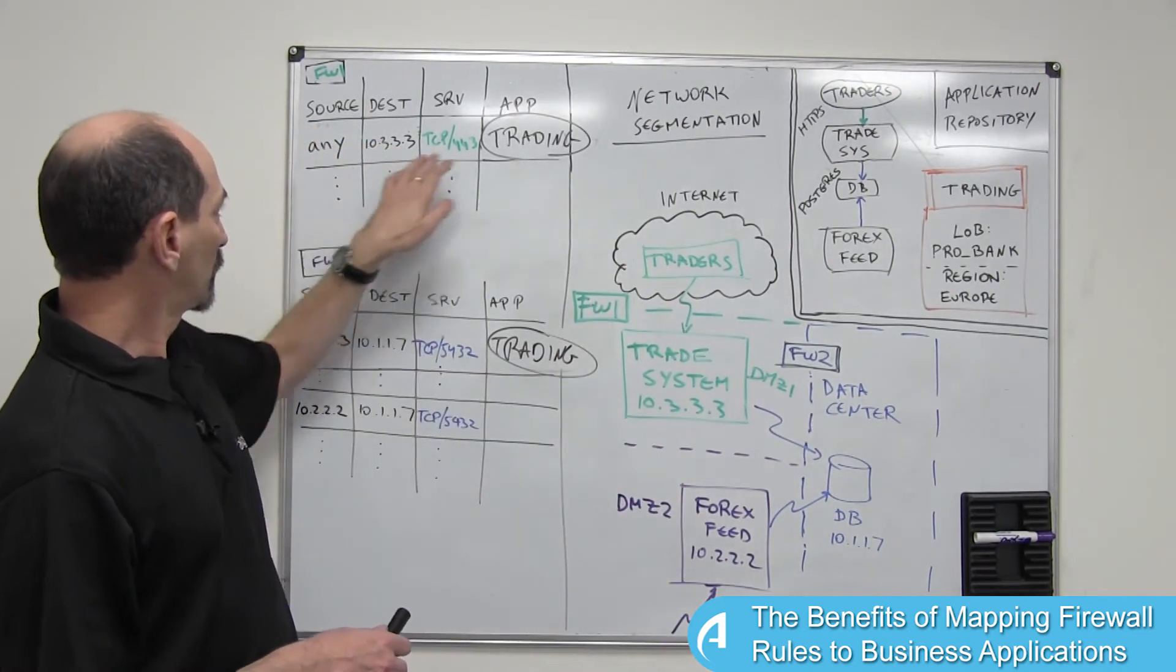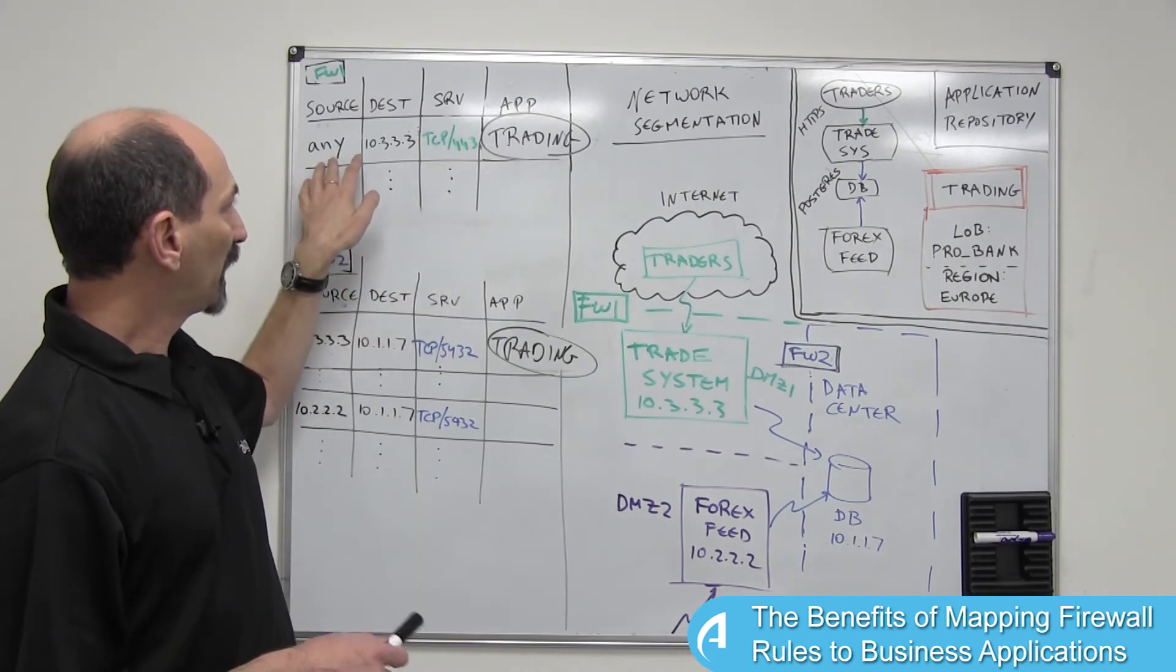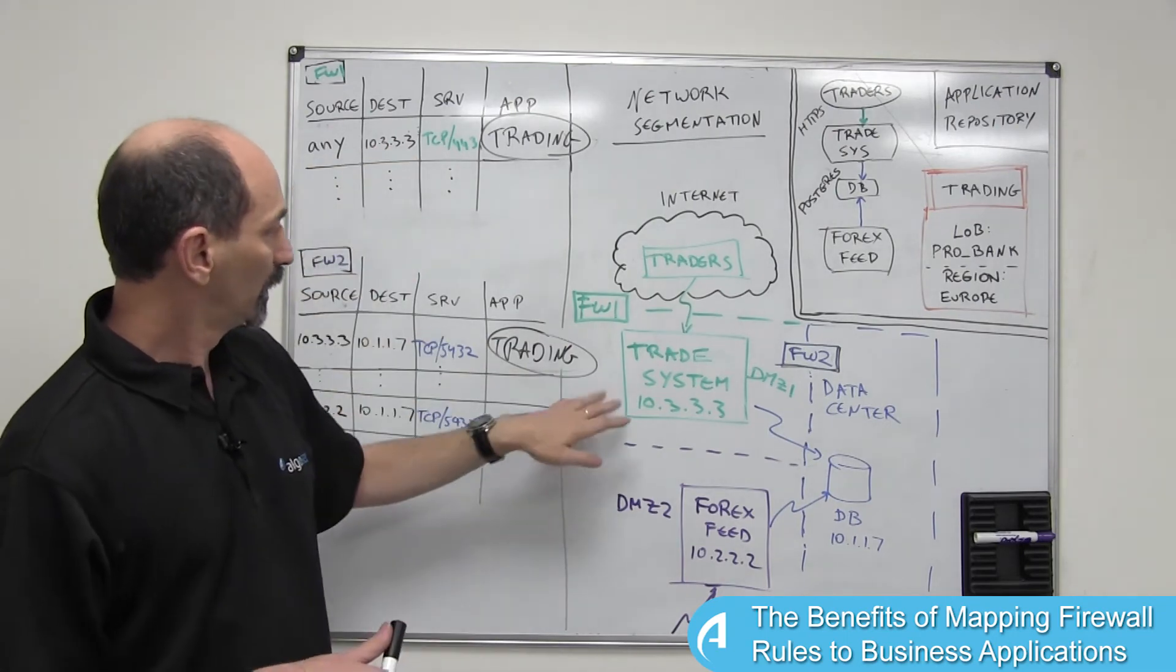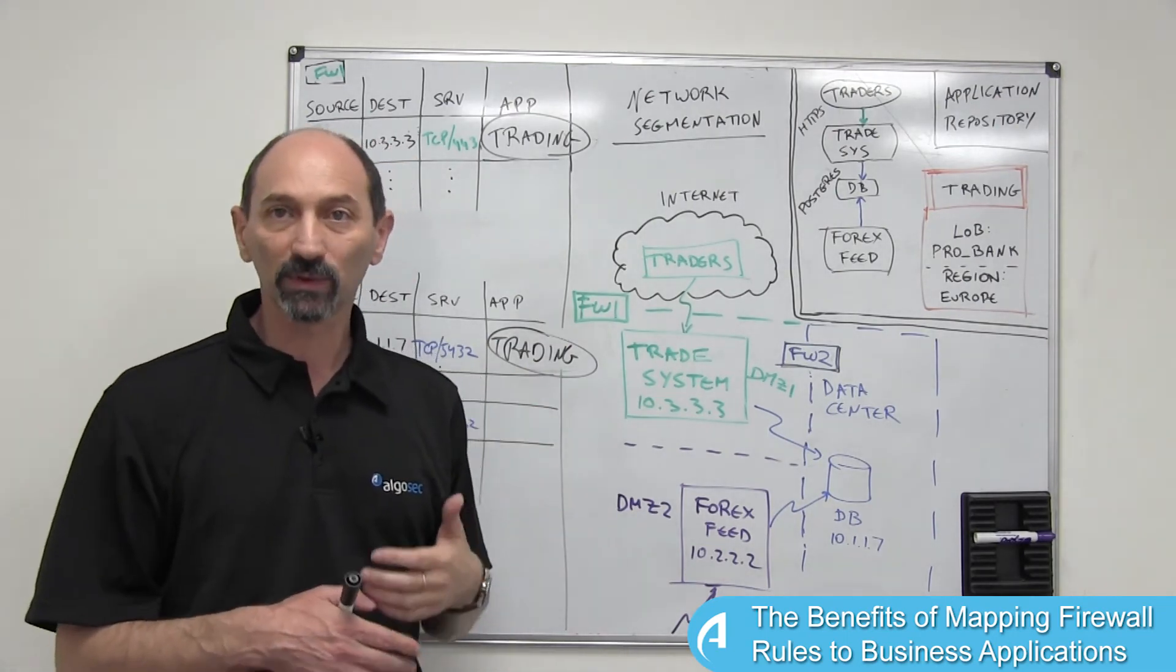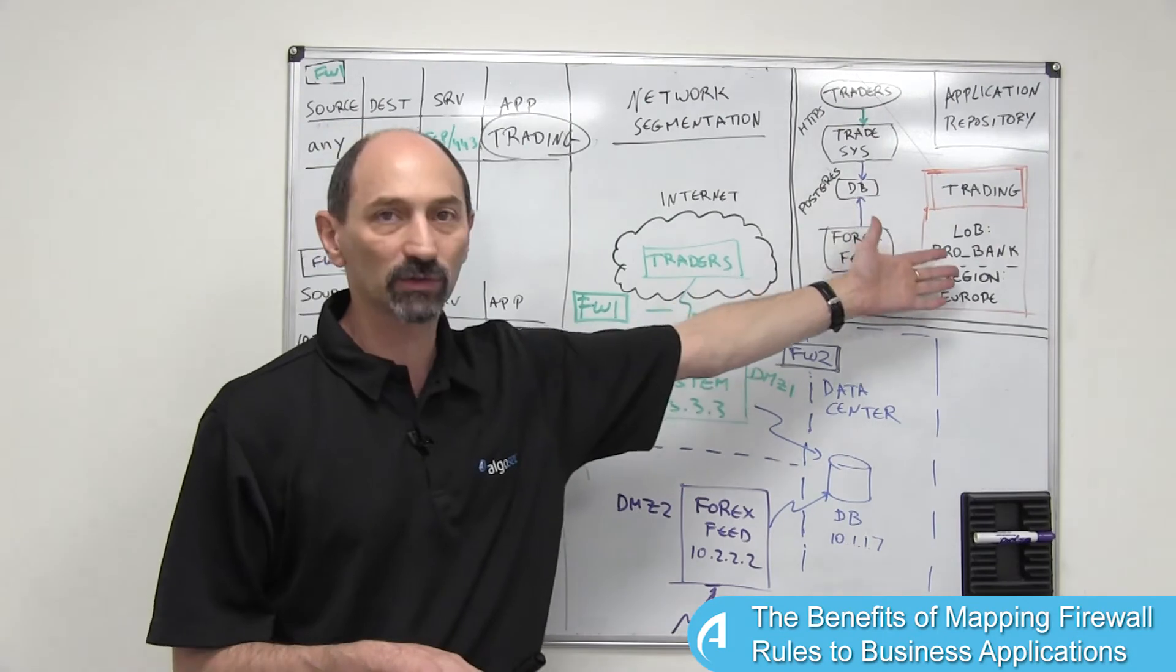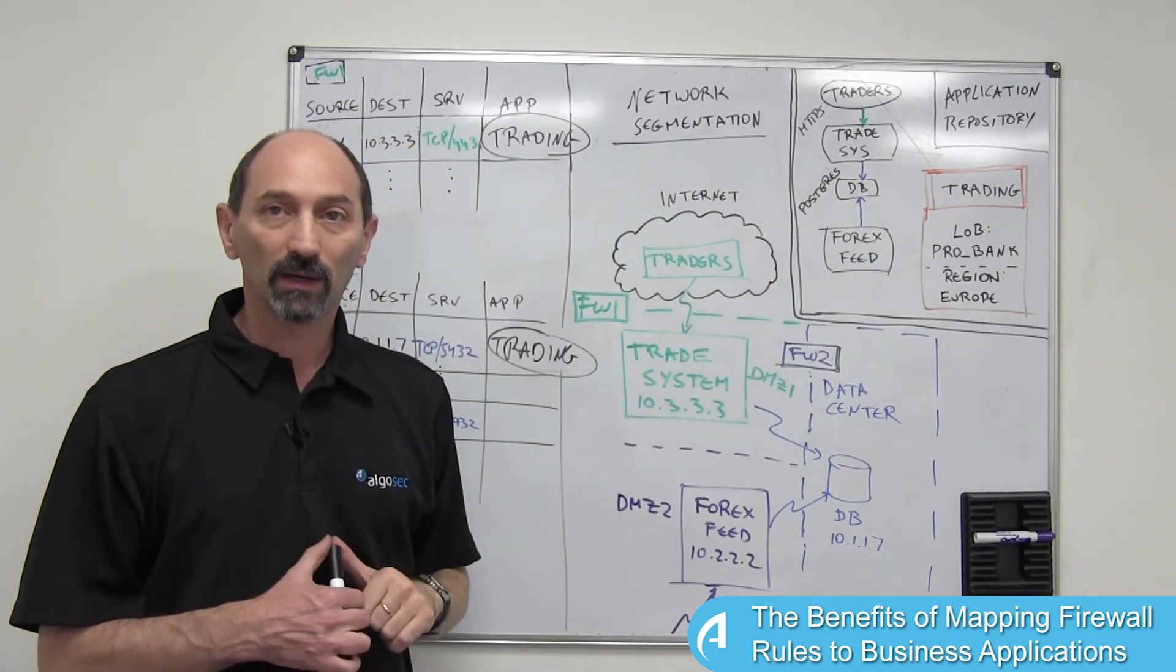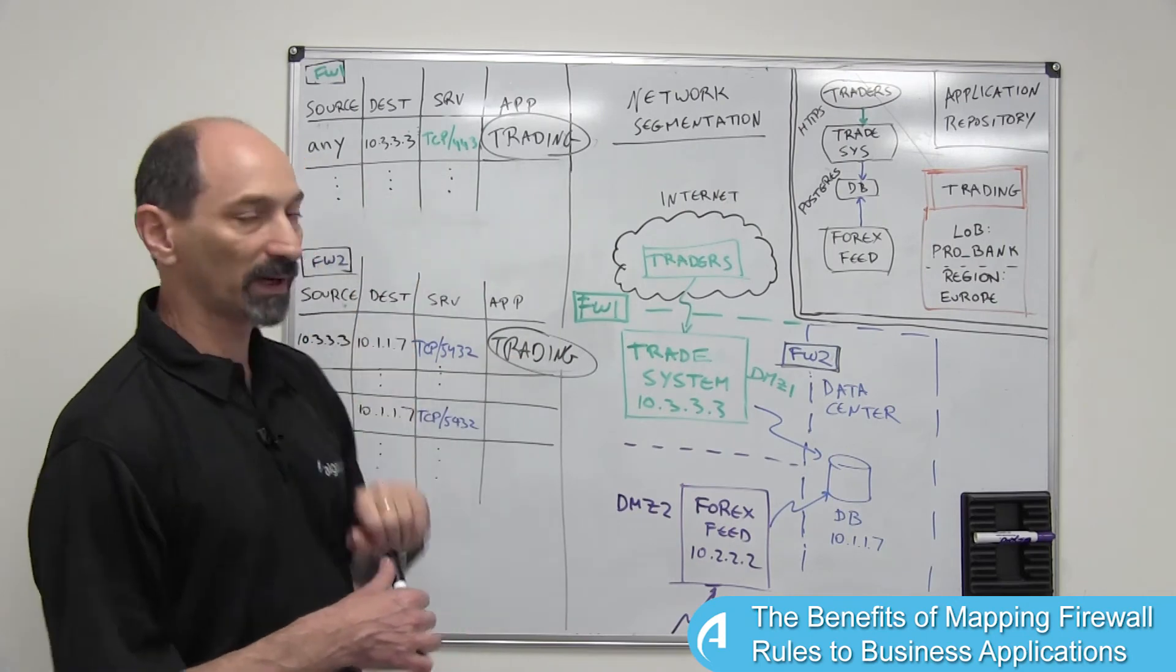And this could also apply to rules that might belong to multiple applications. So such a rule allowing traffic from anywhere to this destination might, in fact, support additional applications, not just the trading application. So you'd have an annotation with multiple business applications supported by that one rule.